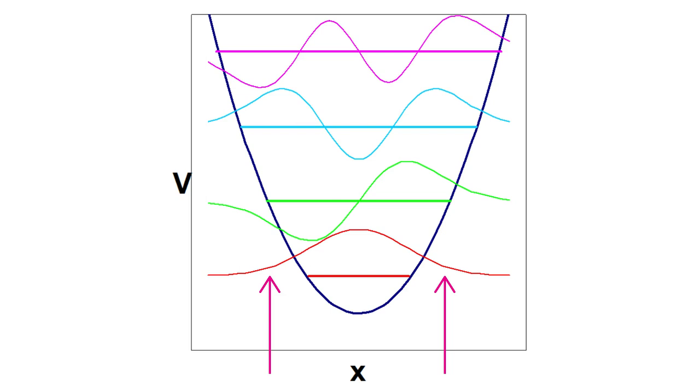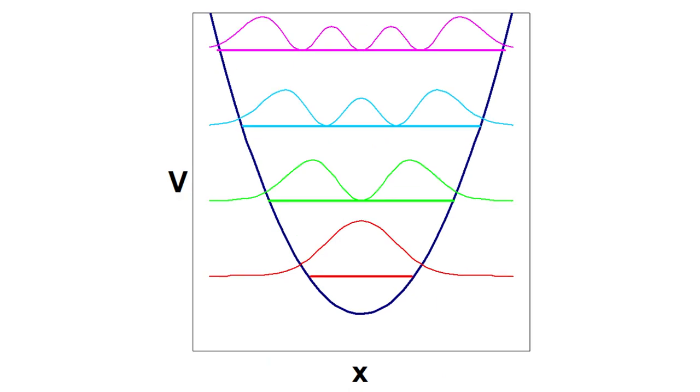Next, look what happens when we make a plot of psi star psi for the different values of v. As you might remember from video 3, psi star psi gives us the probability of finding the system at various points in space. As you can see, the plot for v equals zero shows us that the system is most likely to have a bond length toward the center of the parabola. The probability of having a bond length near the short or long ends of the range is fairly small. However, you might notice that as v increases, the probability at the edges of the parabola rises, and the probability toward the middle decreases.